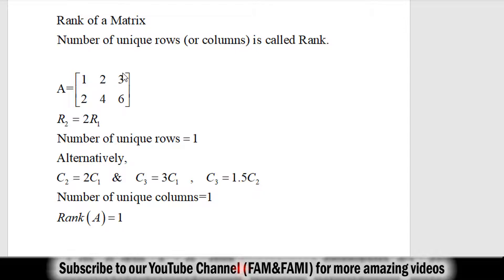Similarly, look at the elements in column 3 — they are 3 and 6, and they can be obtained by multiplying each element in column 1 by constant 3. So 1×3 gives 3, and 2×3 gives 6. Notationally we write column 3 equals 3 times column 1, meaning multiplying each element in column 1 by 3 gives the elements in column 3. So both column 2 and column 3 depend upon column 1.